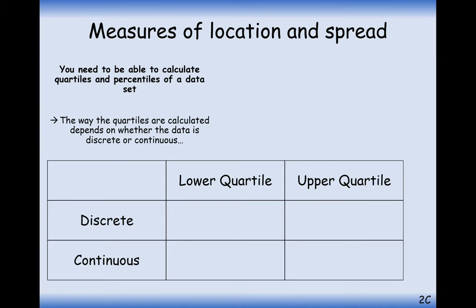We've got two different methods that we use for discrete and continuous data. For the lower quartile, what we do is take N and divide it by four. But for discrete data, if it's a whole value that we get, then the lower quartile is in between that value and the value above. And if it's not a whole number, then we round up and take that data point.